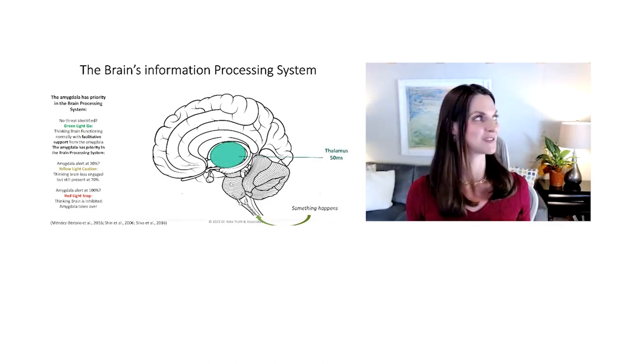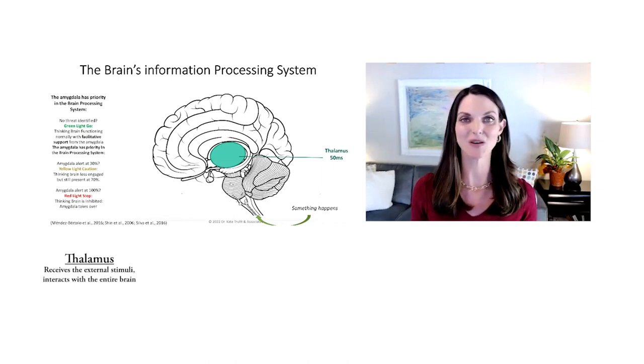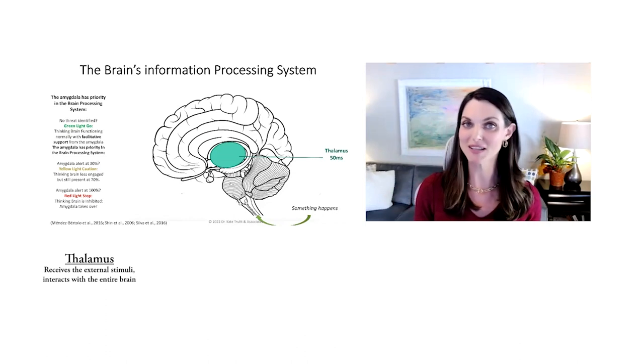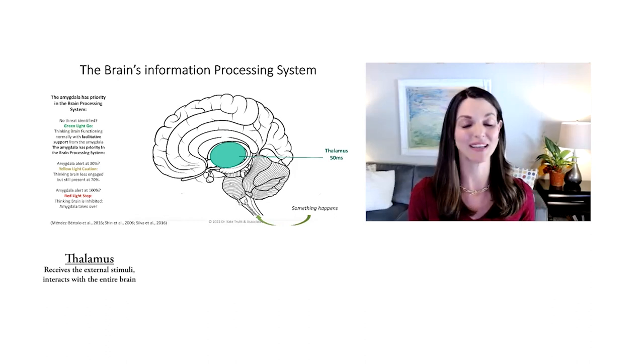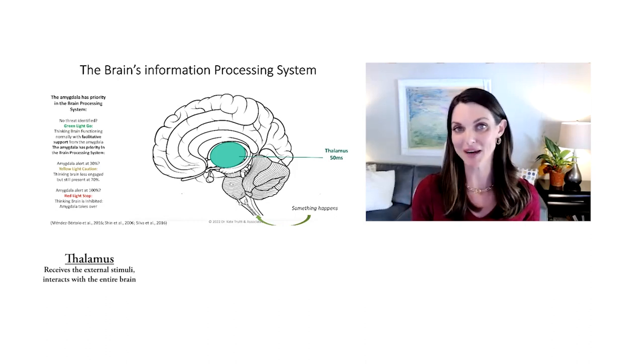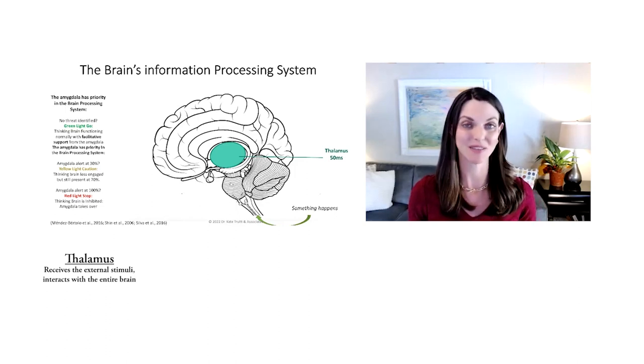That data goes up to your thalamus, which is historically thought about as the post office of our brain. But new science is highlighting that it plays a critical role in so much more and is one of the very rare brain parts that is really communicating with the entirety of our brain all the time.